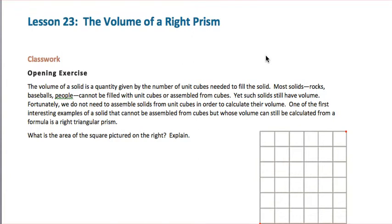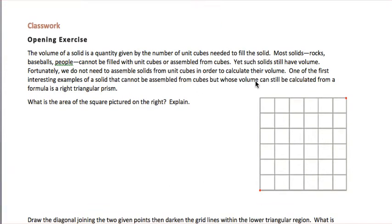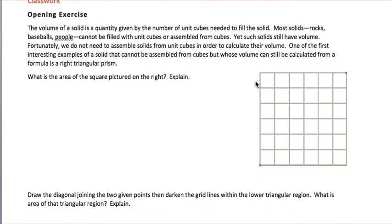In Module 3, Lesson 23, we're going to look at the volume of a right prism. The volume of a solid is a quantity given by the number of unit cubes needed to fill the solid. Most solids — rocks, baseballs, people — cannot be filled with unit cubes or assembled from cubes, but solids still have volume. We don't need to assemble solids from unit cubes to calculate their volume. One of the first interesting examples is a right triangular prism, whose volume can still be calculated.